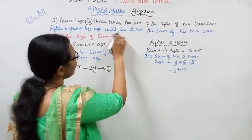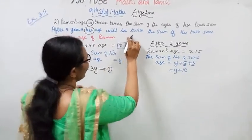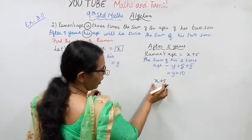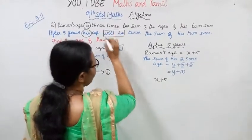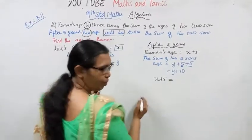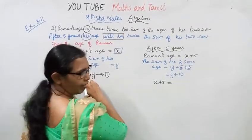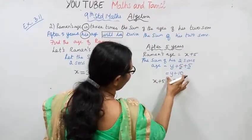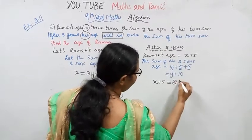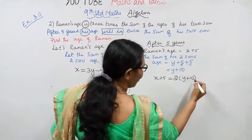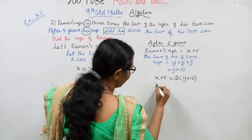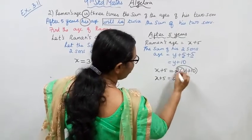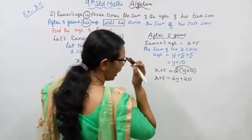The idea of Raman's age: after 5 years, Raman's age will be twice the sum of his two sons' ages. So x plus 5 equal to 2 times y plus 10, which gives x plus 5 equal to 2y plus 20.